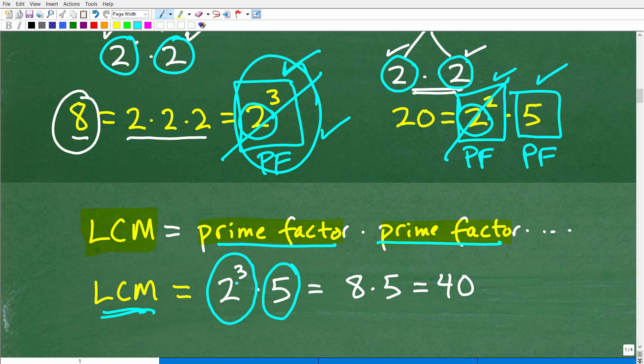Remember, 2 cubed is 2 times 2 times 2, which is 8. So this is 8 times 5, which is 40.